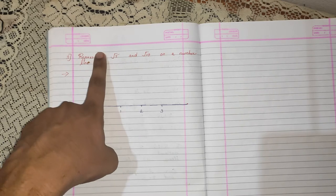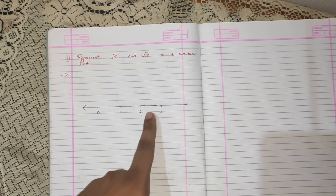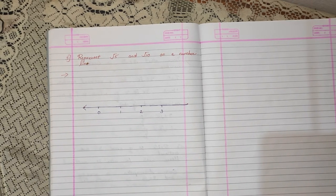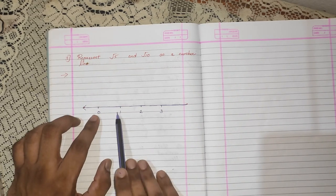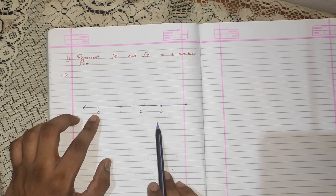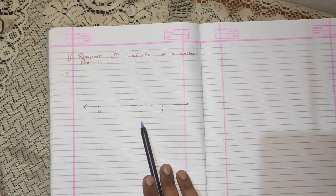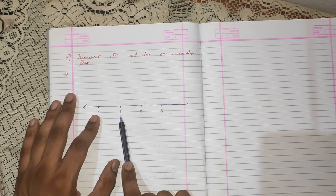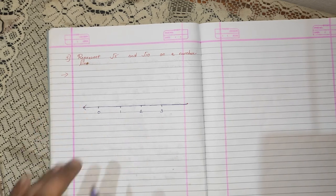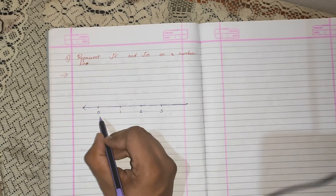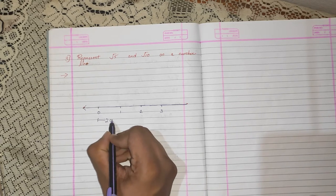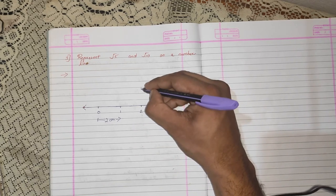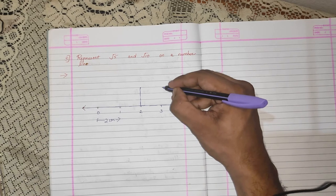Root 5 is bigger than root 4 which is 2, so I know I have to get the value of root 5 between 2 and 3. The first thing I do is measure — I take all 3 points at the same measurement. Ideally we take 2 to 3 centimeters between these points. Here all the points are at equidistance. For example, if this measure is 2 centimeters, then I draw a line of 2 centimeters at point number 2. I will draw a line at point number 2 and point number 3.